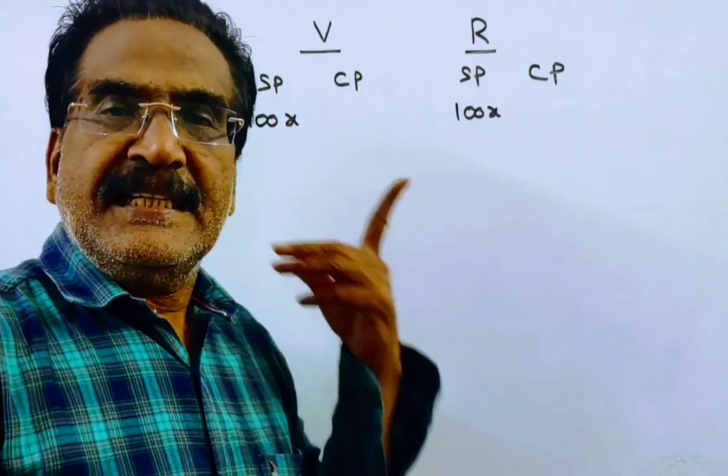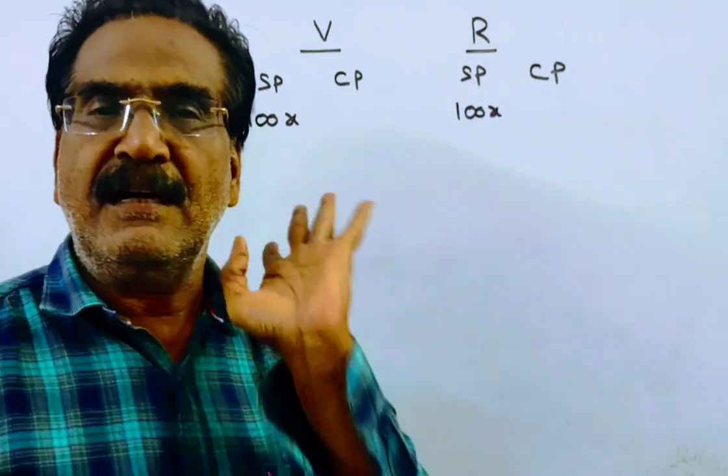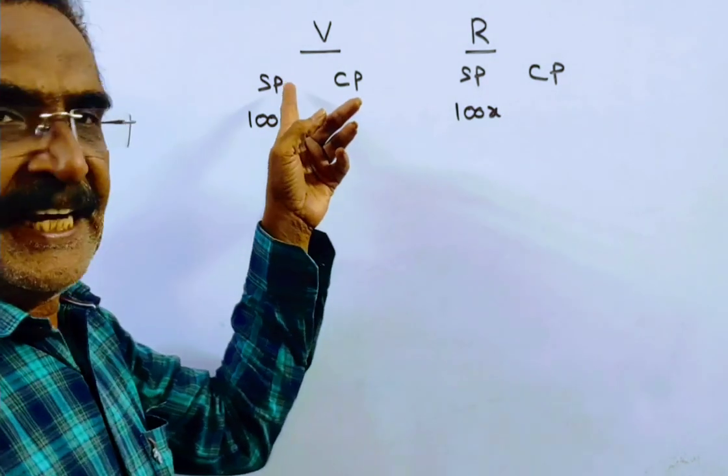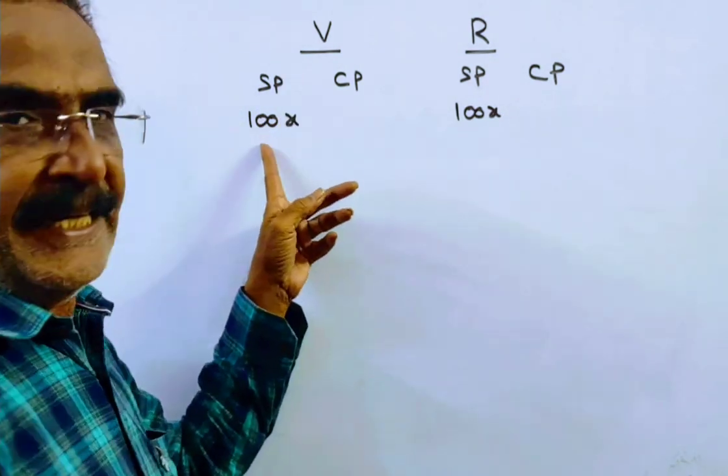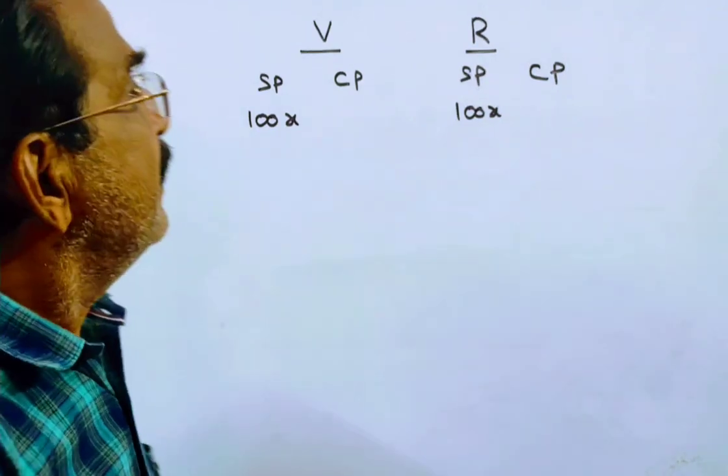It is given that the selling price of both Vinith and Roshan are the same. So let's say that the selling price is 100x for both.